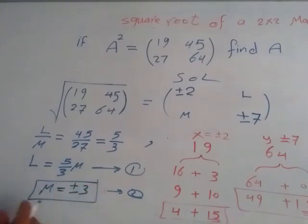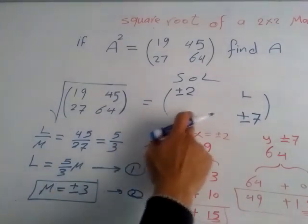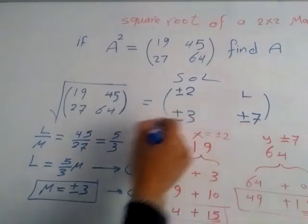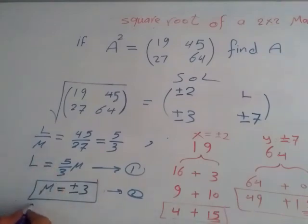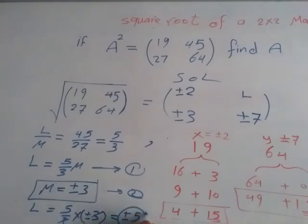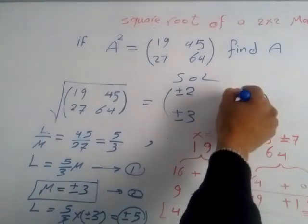This is my M, so I know this place is going to be positive or negative 3. What about L? Just substitute M back in here. So L will be 5 over 3 times 3, but it's positive or negative, so it's going to be positive or negative 1 times 5, which is positive or negative 5. That's L, positive or negative 5.